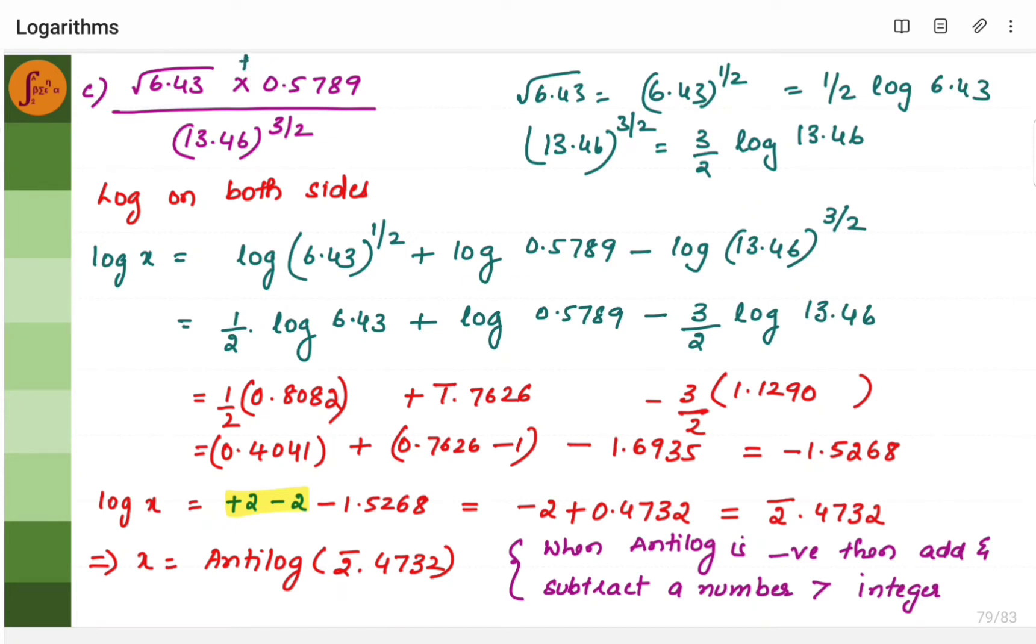So this multiplication will become addition. Division will become subtraction using the log properties, log theorems. Now you find the log value. Here you are getting all negative values. When you calculate all of this, you split here again.